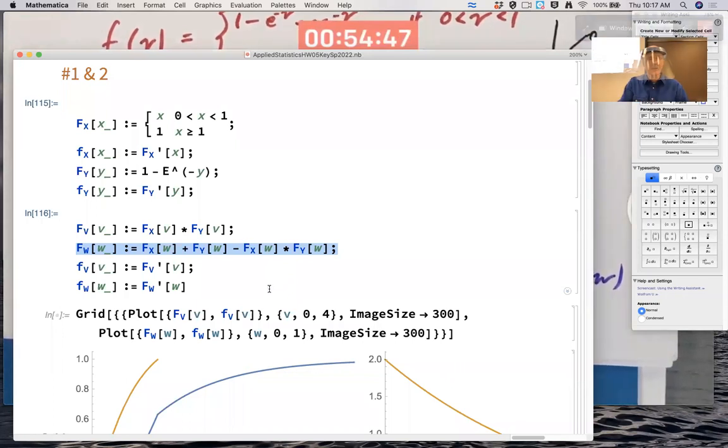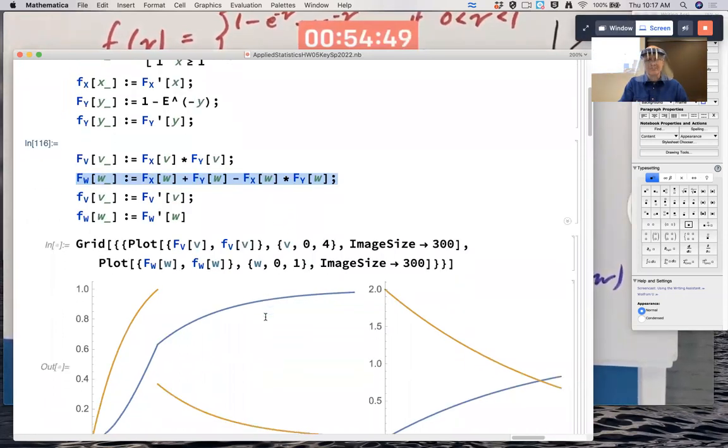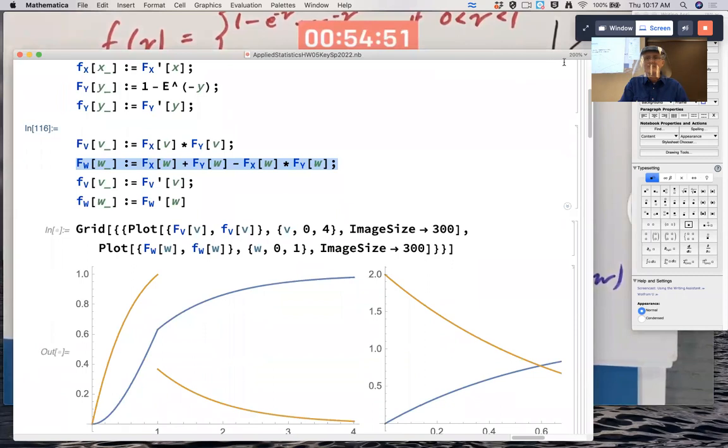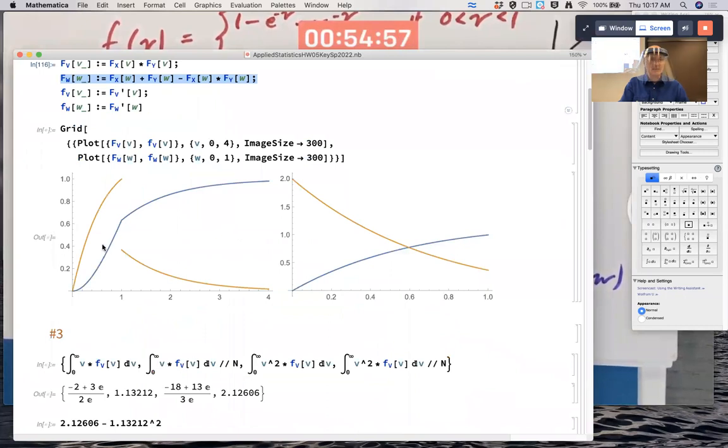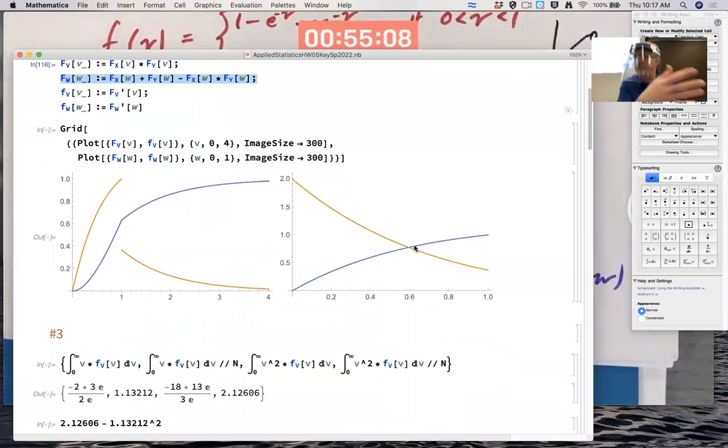Then I differentiated them to find their PDFs and I made graphs. The one on the left is for the maximum. The one on the right is for the minimum. Minimum's got to be between 0 and 1, by the way. X is uniform 0 to 1. It never goes bigger than 1. Y could be bigger than 1. But you're taking the min, so you're never going to get a min bigger than 1. So the domain of W is 0 to 1.